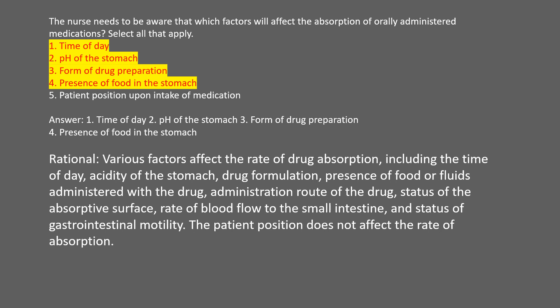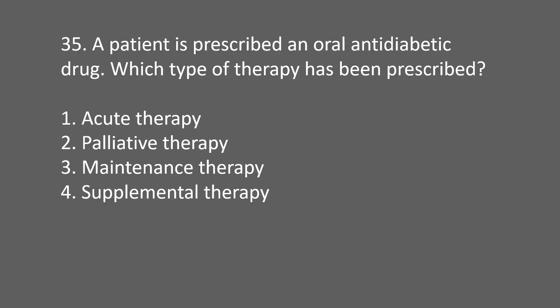A patient is prescribed an oral anti-diabetic drug. Which type of therapy has been prescribed? 1. Acute therapy. 2. Palliative therapy. 3. Maintenance therapy. 4. Supplemental therapy.